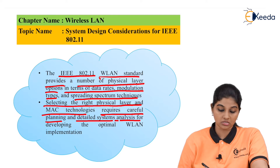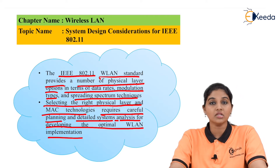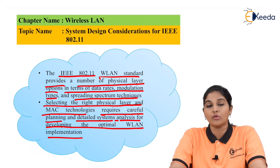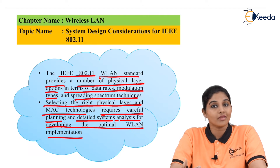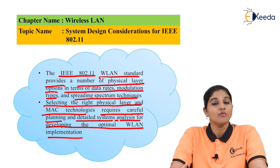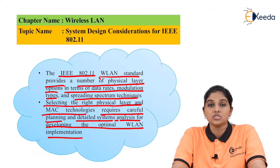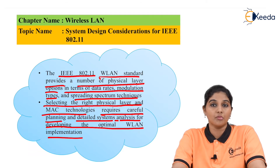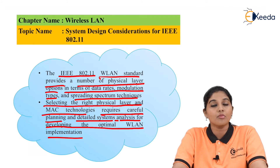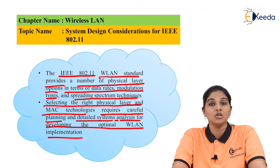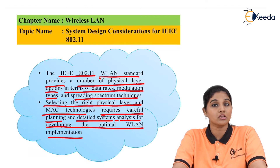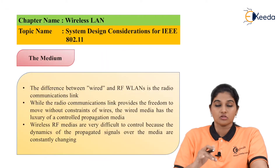Selecting the right physical layer and MAC technology requires careful planning and detailed system analysis for developing the optimal wireless LAN implementation. With the help of system analysis, it is possible to provide coverage area to the wireless LAN network and proper data rates between nodes. By selecting a proper physical layer and proper MAC protocol — since IEEE 802.11 focuses on both — it is possible to provide proper connectivity to various nodes in the wireless LAN network.